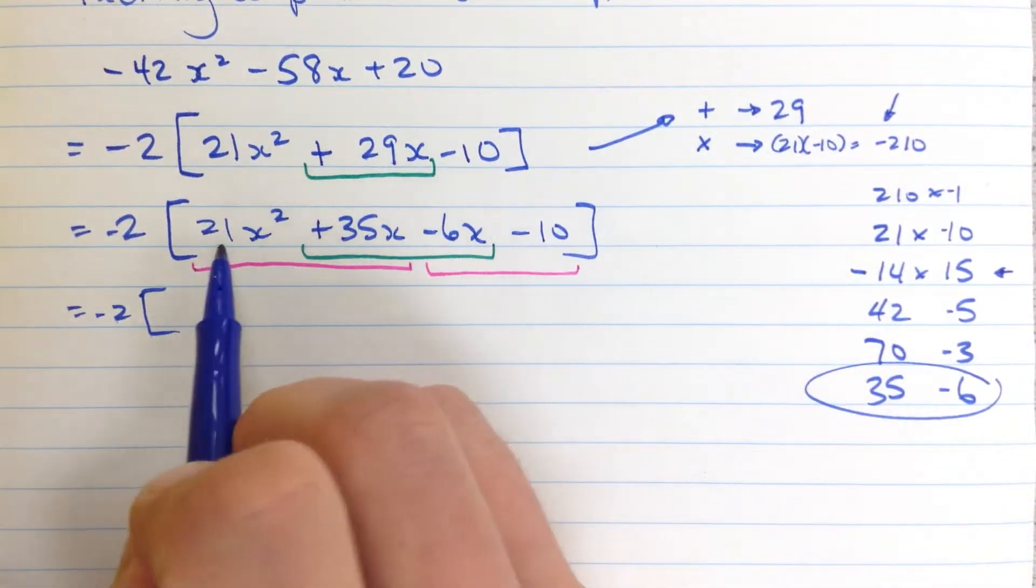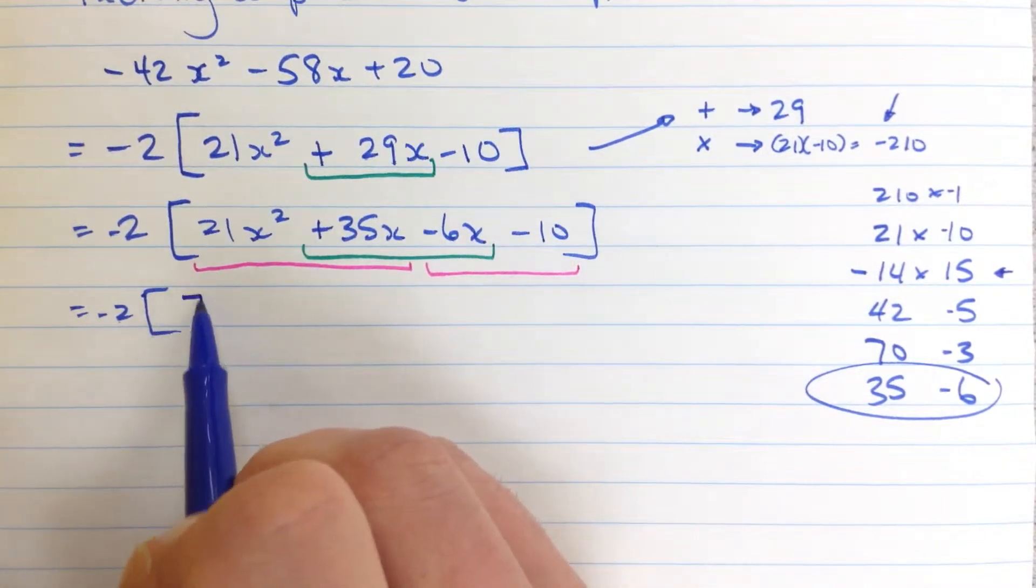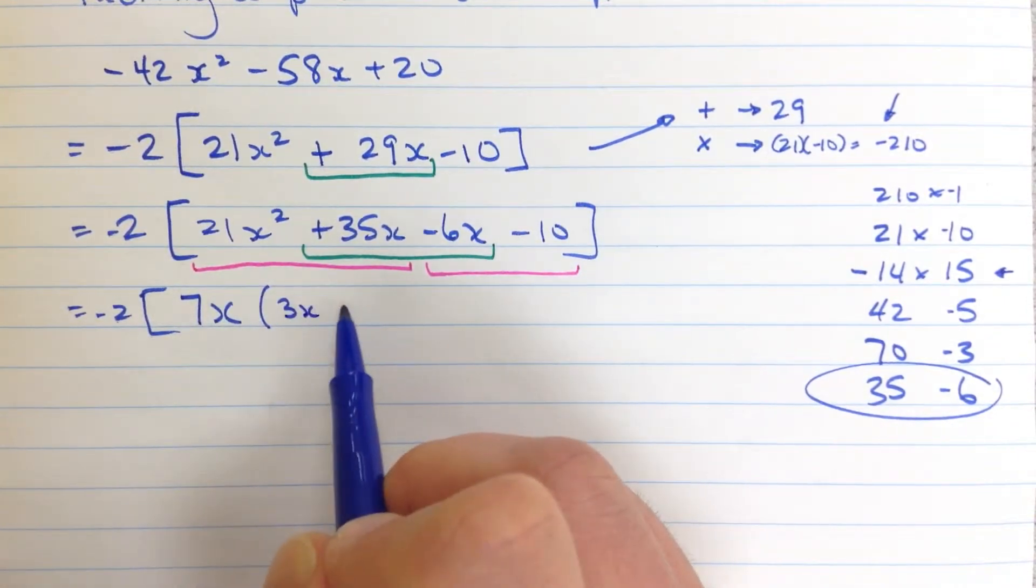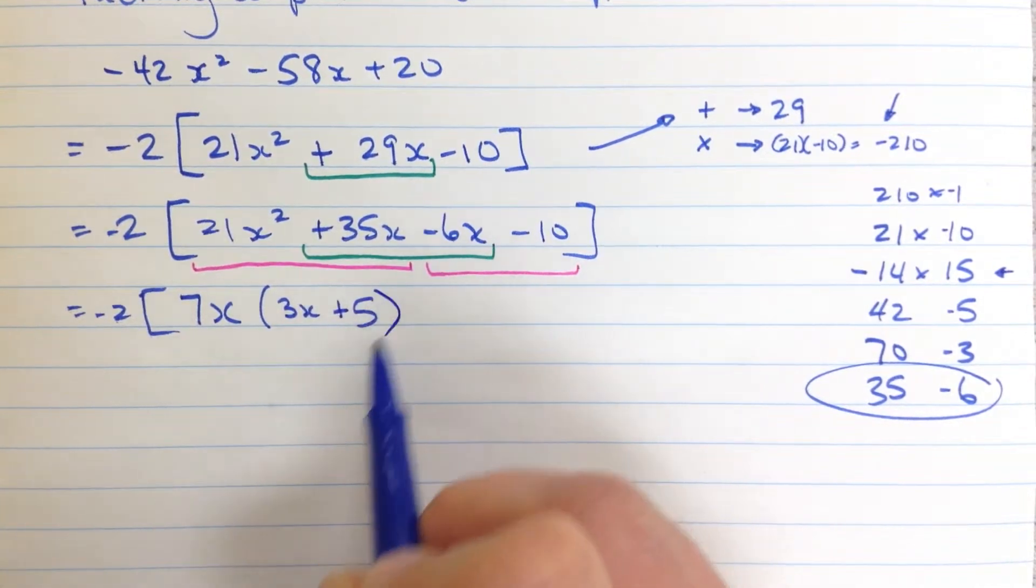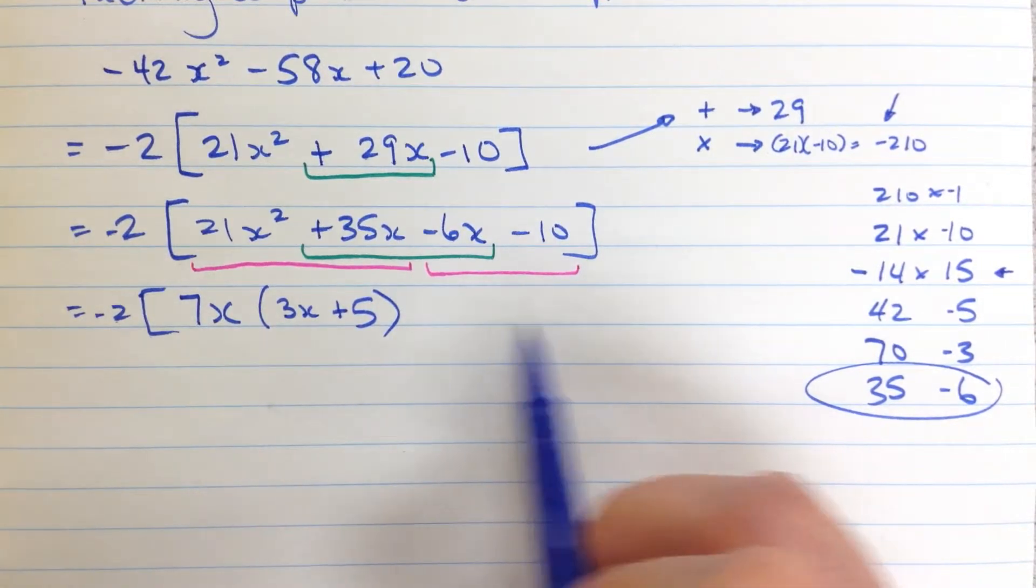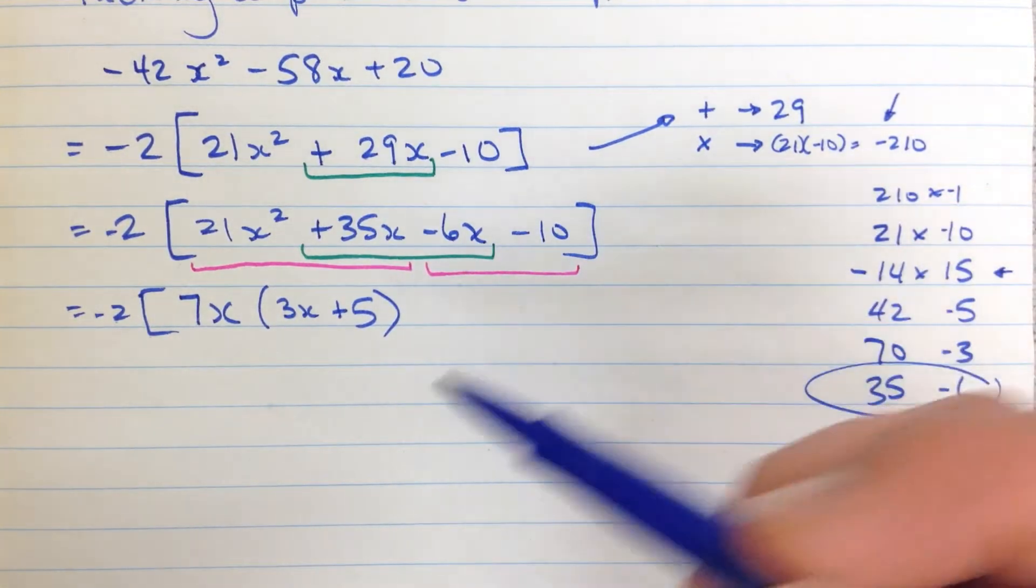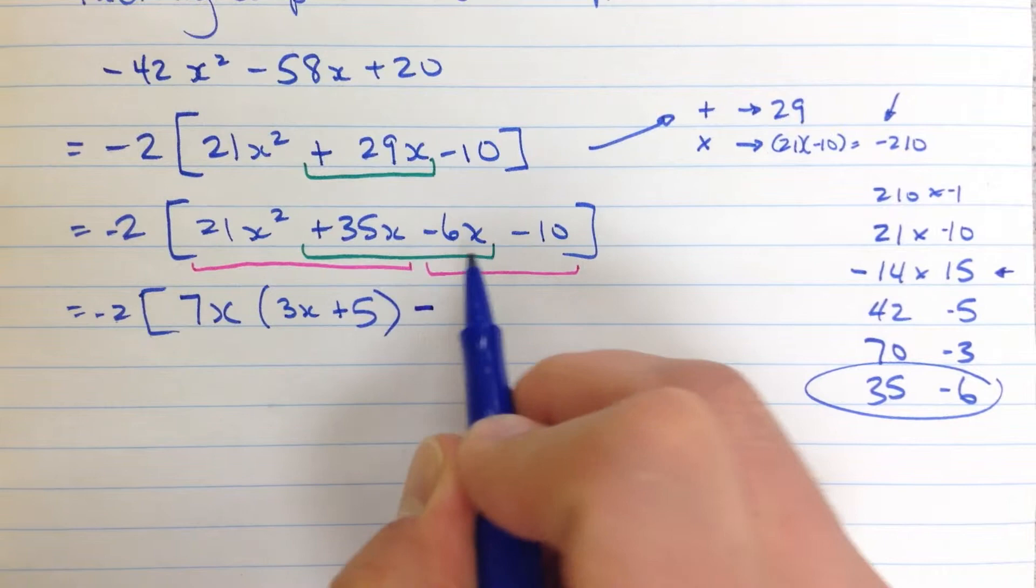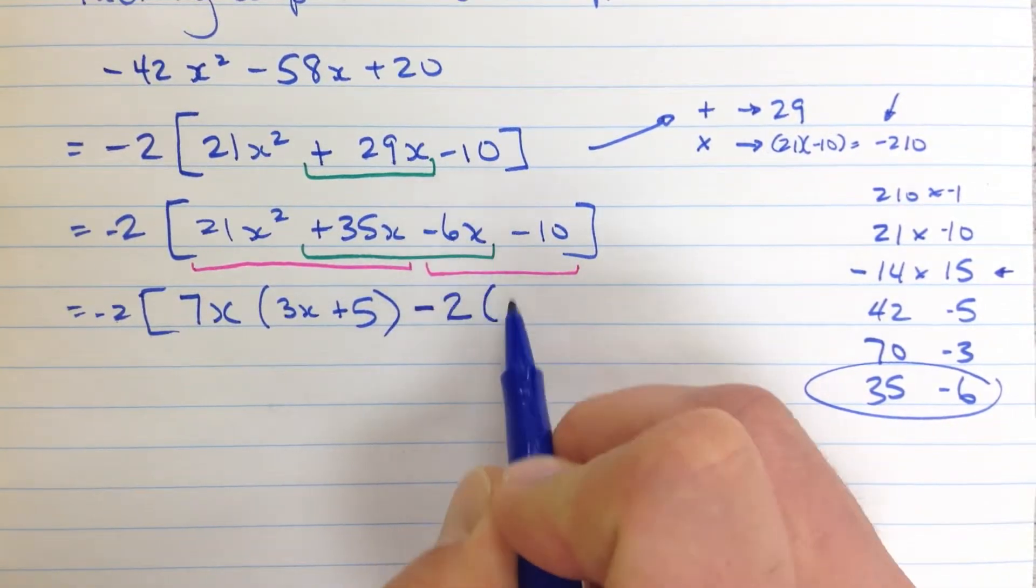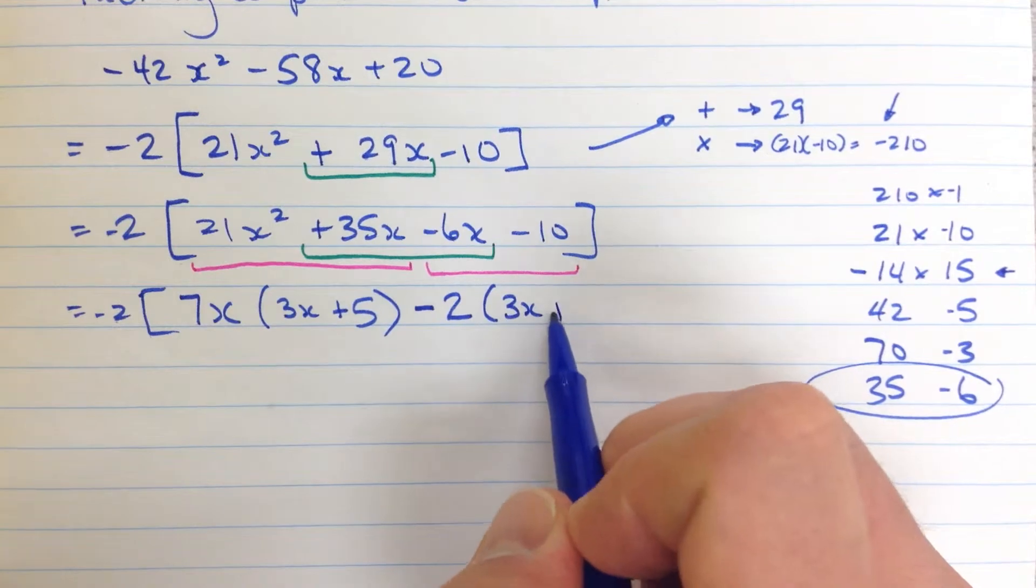So the first thing I'm going to look at, these first two, 21x² and 35x. Well, I see that there's a factor of 7x in each one of those, which leaves me here with 3x, and leaves me here with positive 5. Okay, and now, I'm going to want another one of these 3x plus 5s over here when I factor this guy. Okay, but I see some negative signs in there, so I'm going to be careful to factor those out so they don't end up in this binomial. So negative, and I'm going to factor out a 2. That leaves me with, right here, 3x.